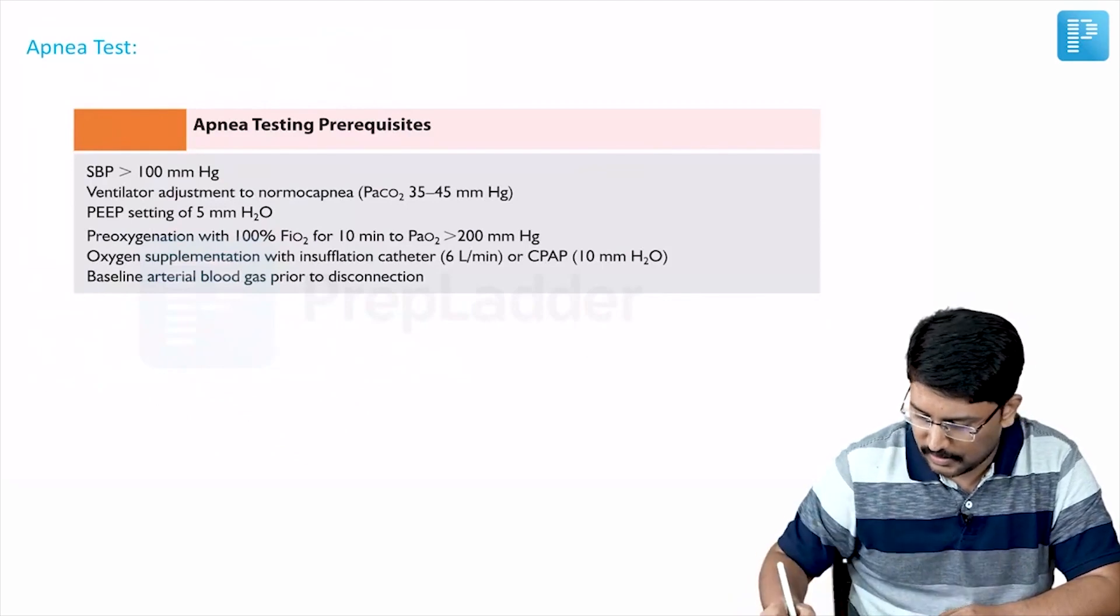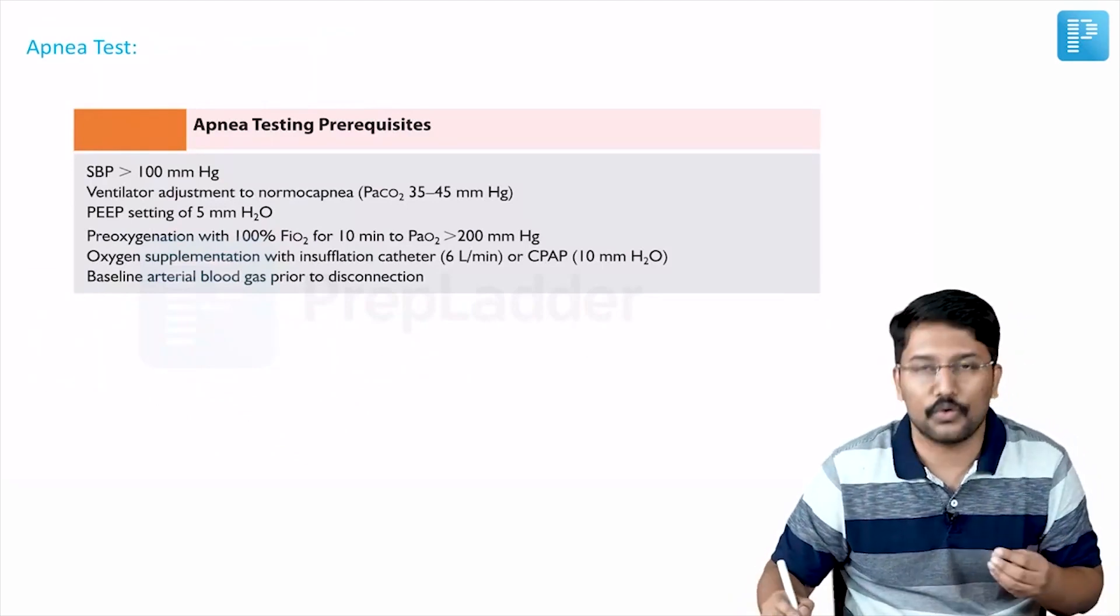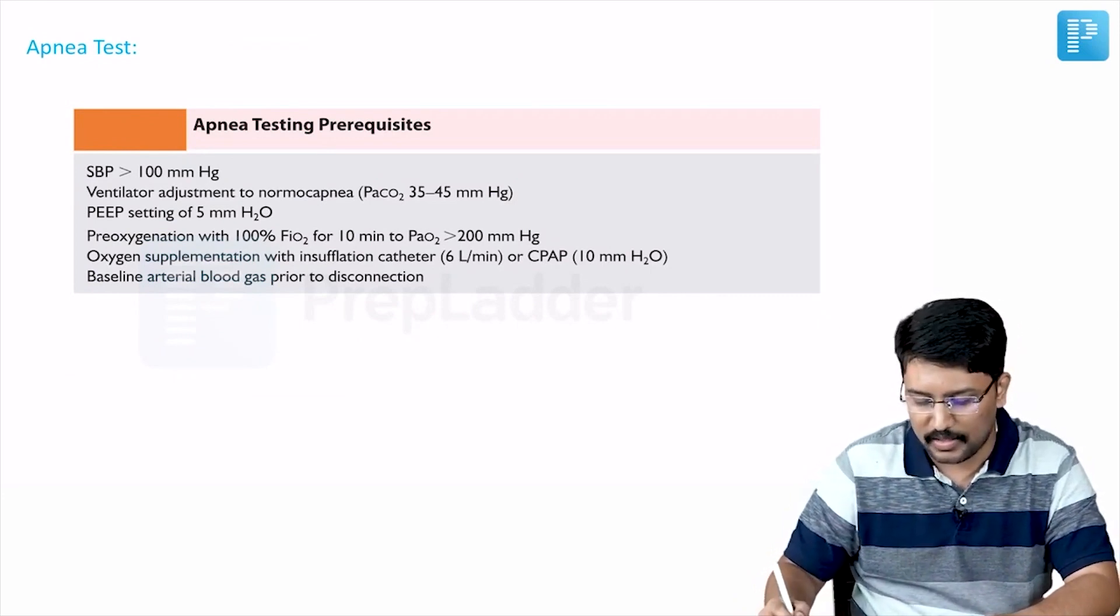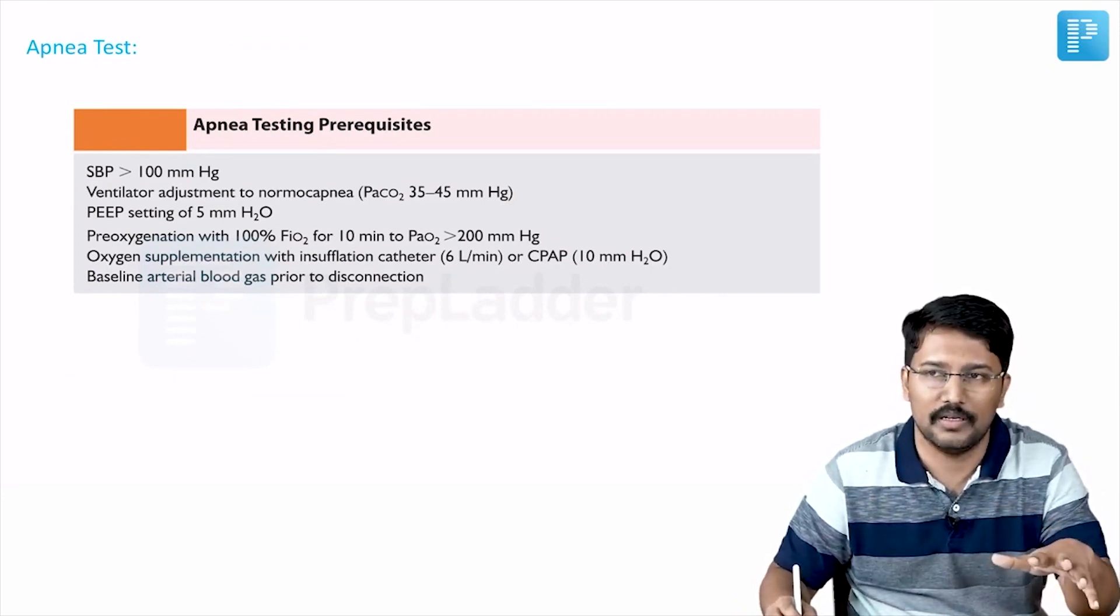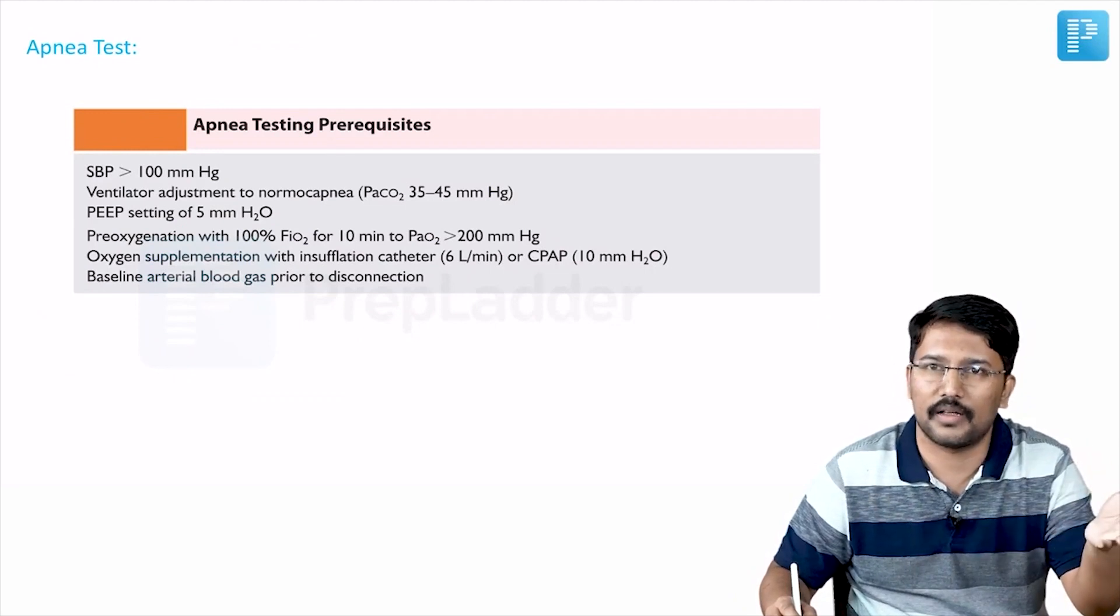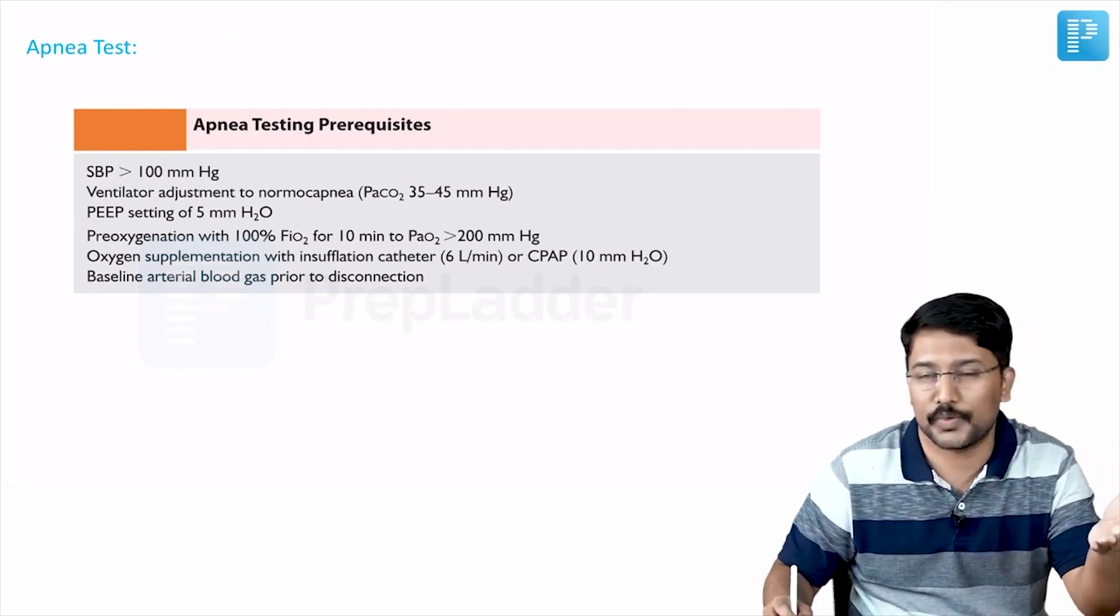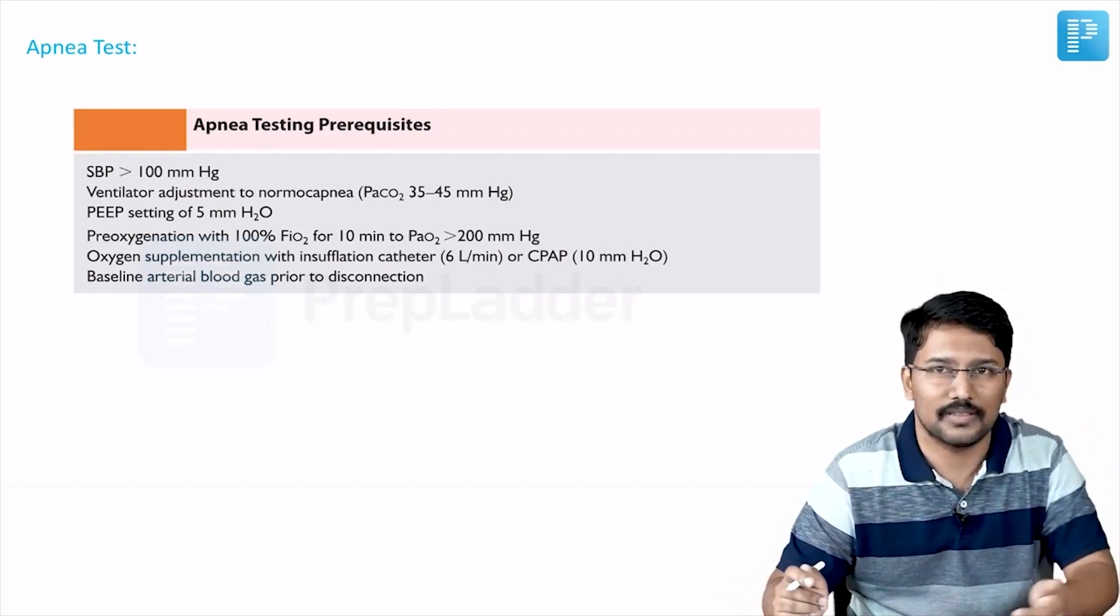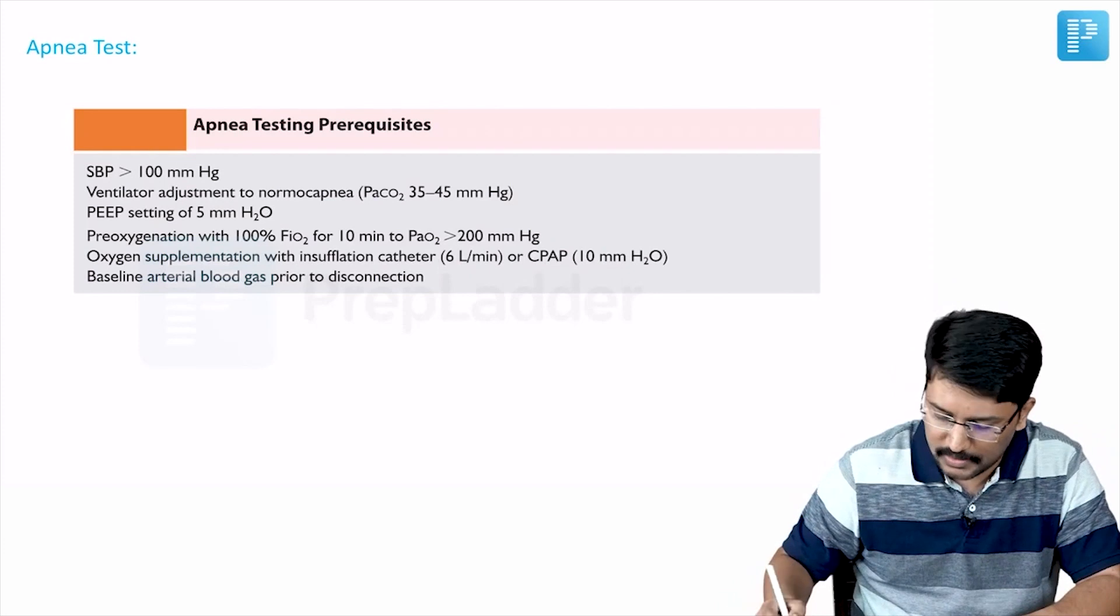Before administration of apnea test, we should know the important prerequisites. Because for example, if patient is already having certain hemodynamic instability, then apnea test will not be reliable and it can turn catastrophic, especially if the patient already has normal brainstem functions, we are actually pushing him towards death. So what are those prerequisites?